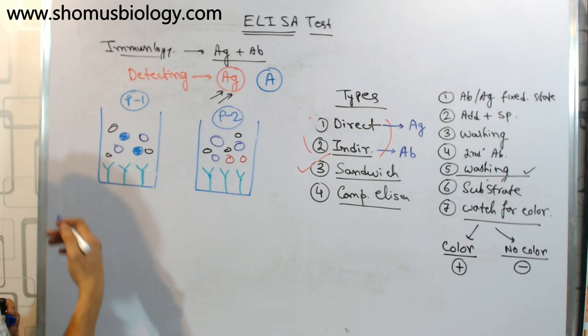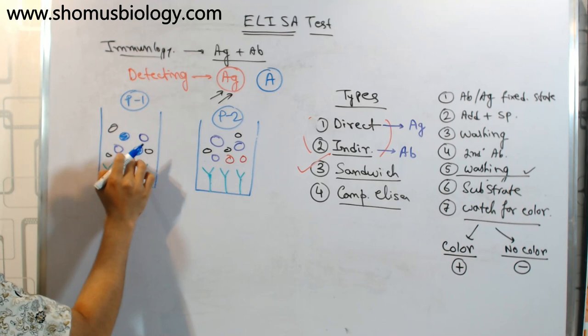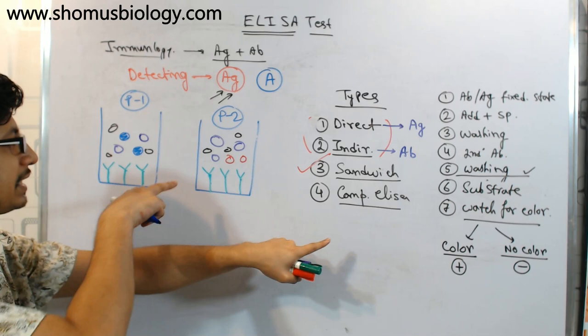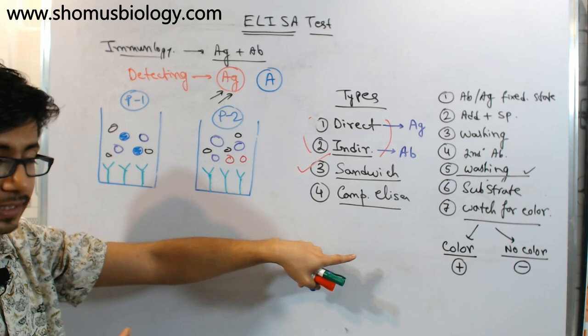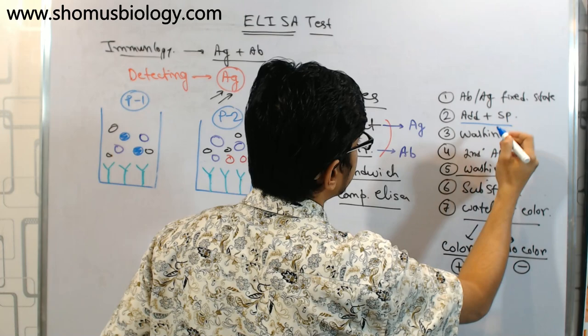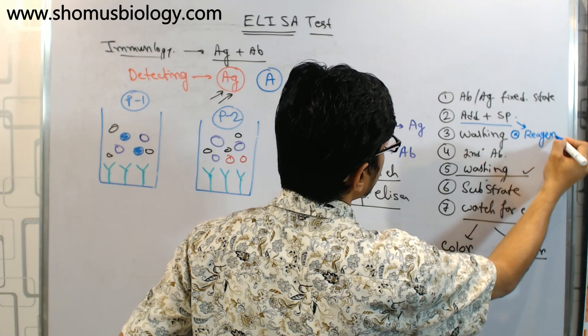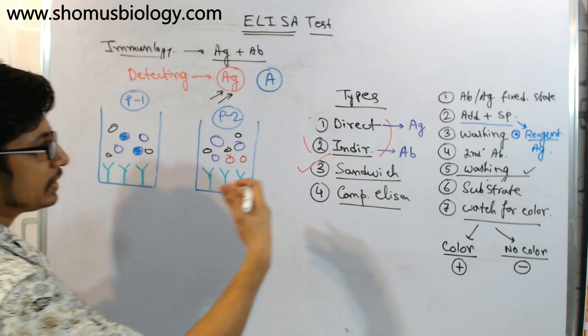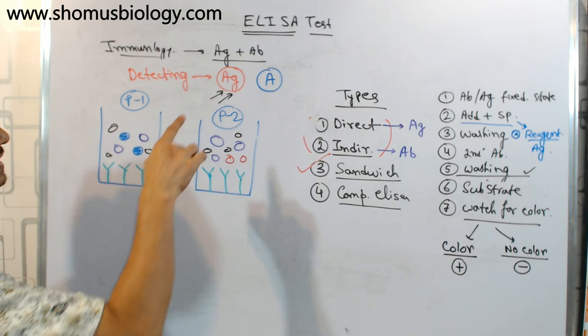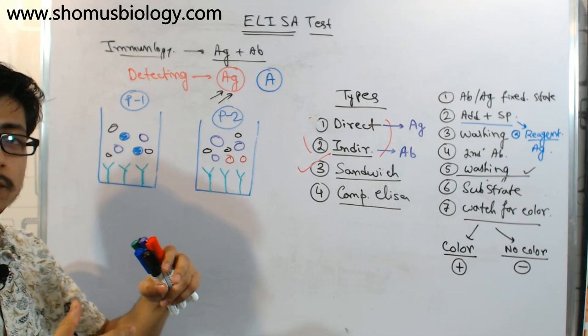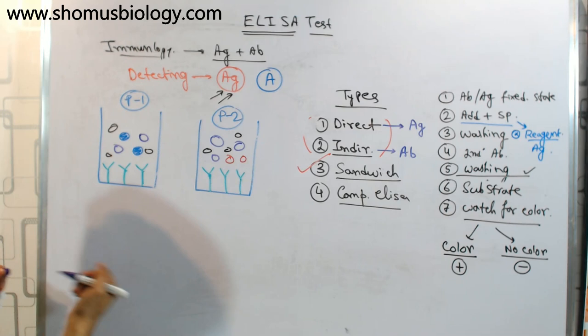We allow antigen-antibody interaction. In the left-hand well, if the patient sample contains the antigen, it will bind to the antibody. But competitive ELISA differs from other types here — after the addition of specimen, in all other ELISAs there is a washing stage, but in competitive ELISA there is no washing stage. Instead, we directly add a reagent, which is the same specific antigen we are trying to detect from the patient specimen — Antigen A linked with an enzyme.